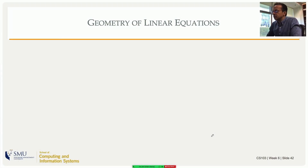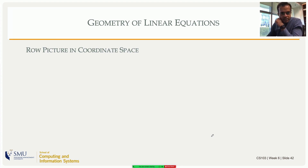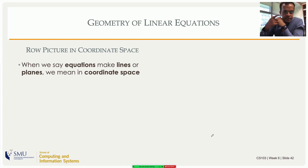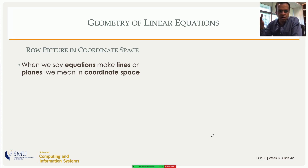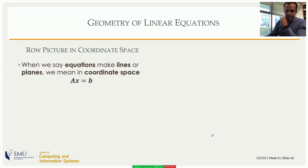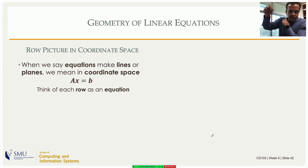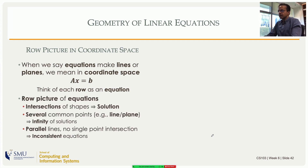Let's move on to the geometry of linear equations in coordinate space, where you have lines, curves, and planes. A linear equation in R2 is a line, and in R3 it is a plane. We talked about intersections of two lines, two planes, or three planes to visualize solutions. That is one geometry — the row picture — where we think of each row as an equation and look at its shape in coordinate space.